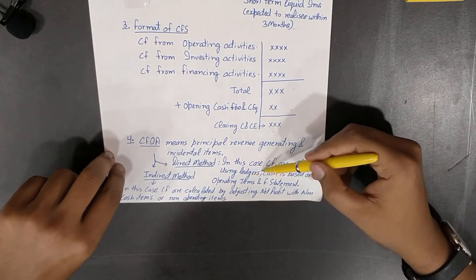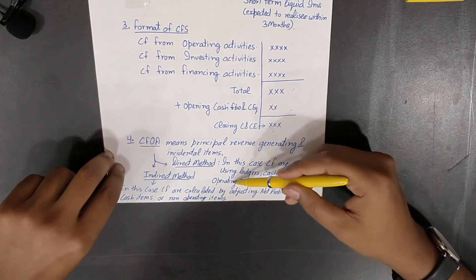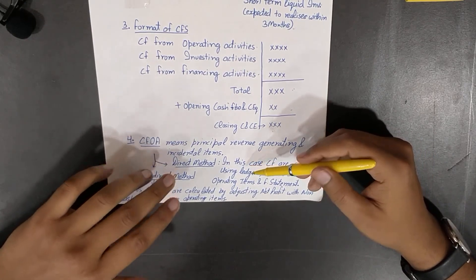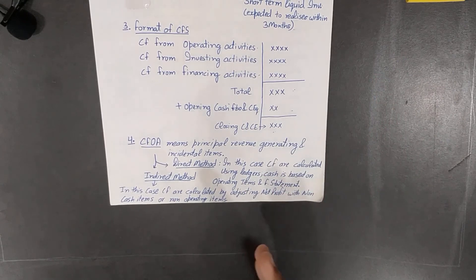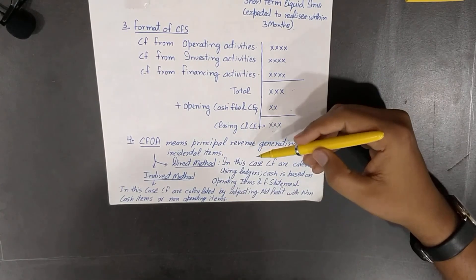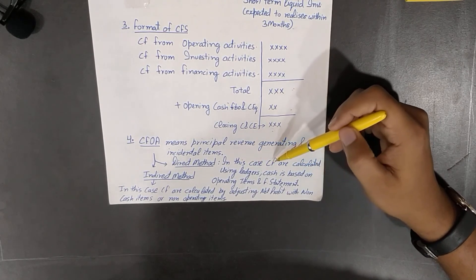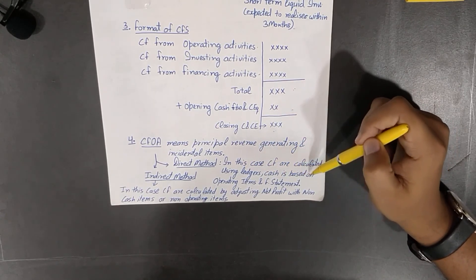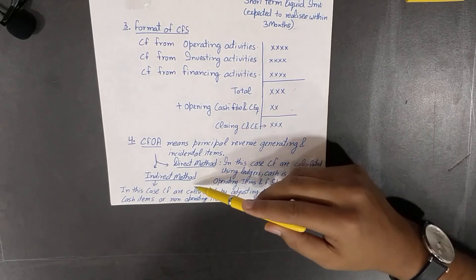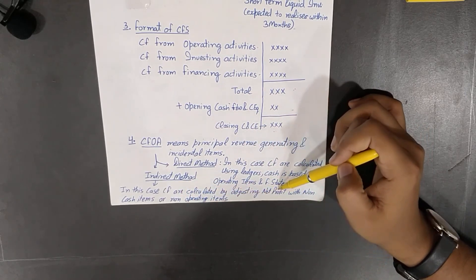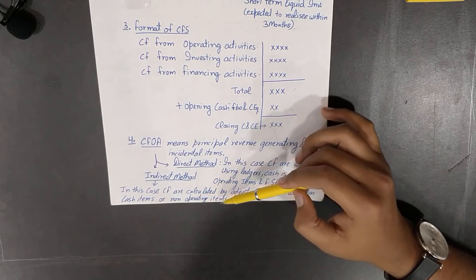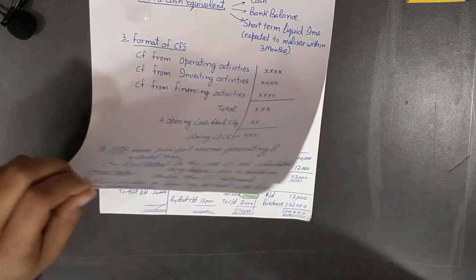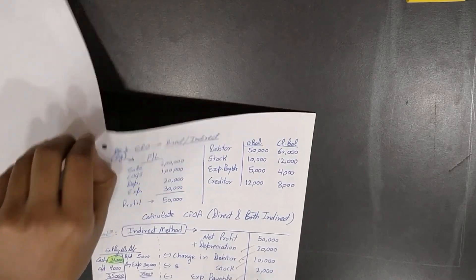Cash flow from operating activities can be computed with two methods: one is direct method and one is indirect method. In case of direct method, cash flows are calculated using ledgers. Cash is based on operating items and financial statement. It is pretty simple. Direct method, you just have to take the cash balances and cash figures from the cash account which are related to operating activities. Indirect method: in this, cash flows are calculated by adjusting the net profit with non-cash items and non-operating items. For example, net profit will add back depreciation.